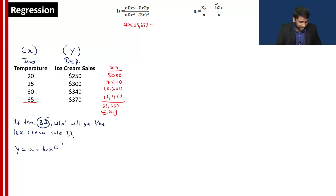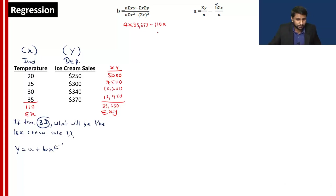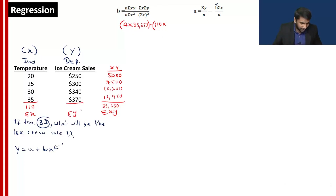Now let's take sigma X — the addition of the X column: 20+25+30+35 = 110. So sigma X is 110. Next, sigma Y — the addition of the Y column: 250+300+340+370 = 1260. So sigma Y is 1260.